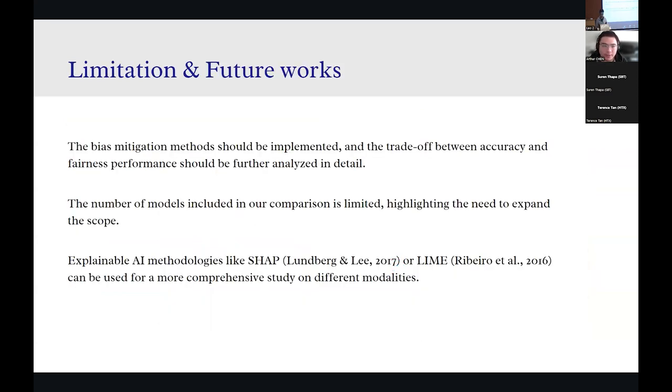So after the results, I want to talk a little bit about the limitations and future works. The first point is that bias mitigation methods should be implemented. We can carry out further analysis on probably the trade-off between accuracy and fairness performance to have a better understanding about, for example, the robustness and stability of the different modalities in terms of fairness. The second point is that the number of models included in our comparison is limited, highlighting there is a need to expand the scope by bringing, for example, more up-to-date large language models as well as larger datasets, like MAMI dataset. The third point is that maybe we can also employ some explainable AI technologies like SHAP or LIME that can be used to review further what kind of different knowledge provided by different modalities and how they supplement each other in the multi-modality cases.